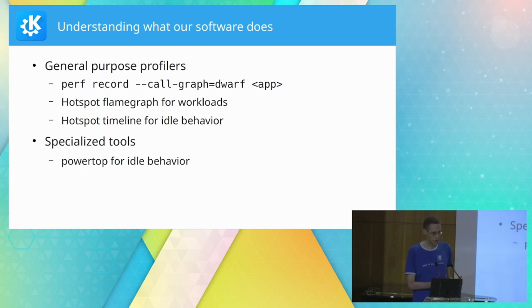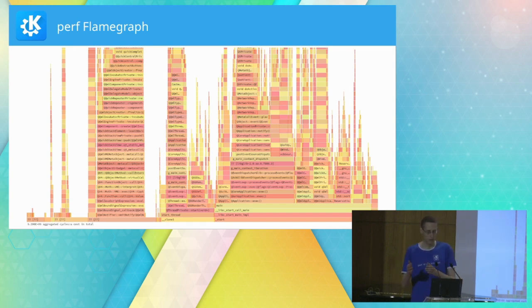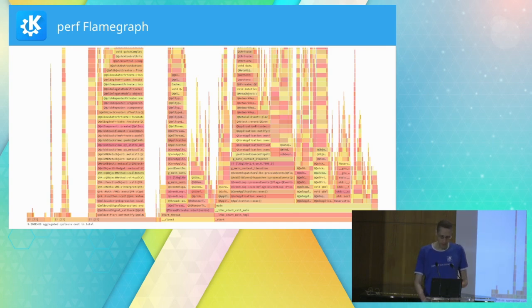For looking at a specific application, that works well. For idle behavior we want the full system view, so we need a specialized tool like PowerTOP. In Hotspot you get a flame graph view — horizontal axis shows CPU time cost, vertical axis shows the call graph. You look for things that shouldn't be there, or things that are surprisingly more expensive than expected.